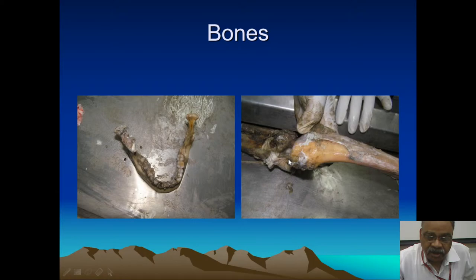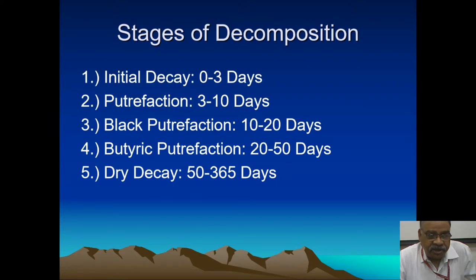Stages of decomposition: initial decay is 0 to 3 days — it varies on temperature, environment, and geographical location. Putrefaction is 3 to 10 days. Black putrefaction, where the body becomes blackish, is 10 to 20 days. Butyric putrefaction — fat-type decomposition where fat gets decomposed — then dry decay when all soft tissue is gone and disappeared.